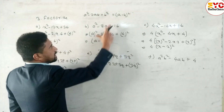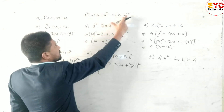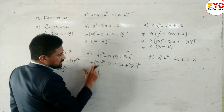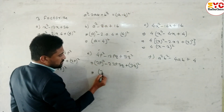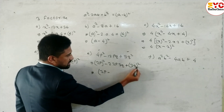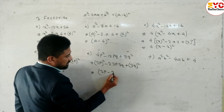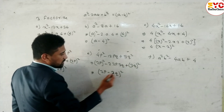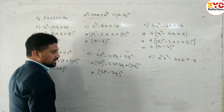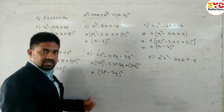This is in the form of a² - 2ab + b², the formula of (a - b)². In place of a we have 2p, and in place of b we have 3q, so the answer is (2p - 3q)².